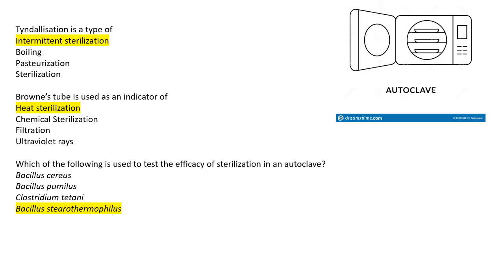Next: Brownie's tube is used as an indicator of what? Don't get confused — Brownie's tube is a chemical indicator used for heat sterilization. It contains a chemical solution that is red in color and sensitive to heat. On sterilization, the color changes. So Brownie's tube is a chemical indicator for heat sterilization.